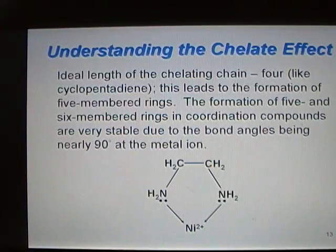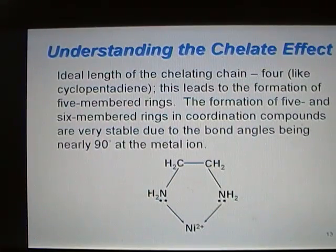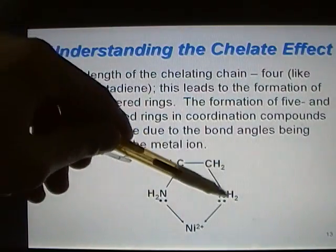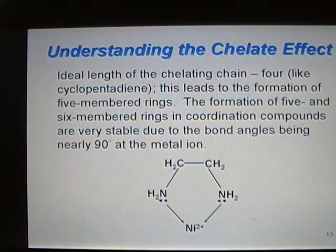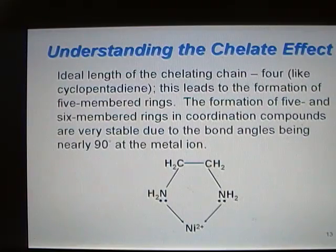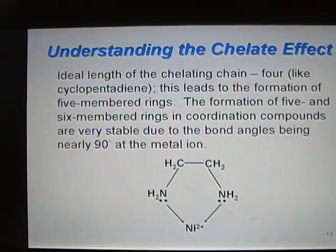When looking at the chelate effect, the ideal length of a chelating chain is about four atoms — one, two, three, four — which leads to the formation of five-membered rings. Five atoms works very well too, leading to a six-membered ring. The formation of five- and six-membered rings are very stable due to the bond angles being nearly 90 degrees at the metal cation.